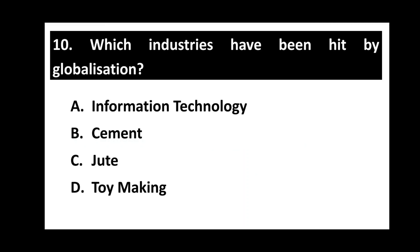Question number ten. Which industries have been hit by globalization? Options are: information technology, cement, jute, toy making. The right option is option D, toy making.